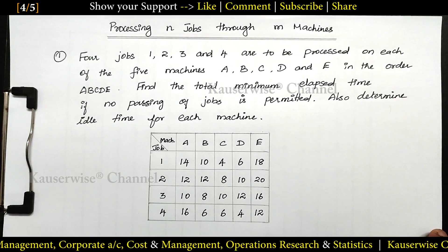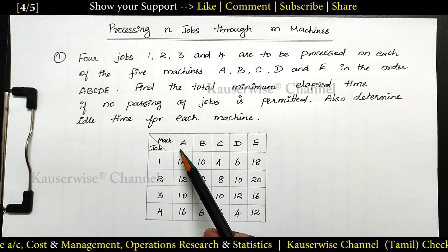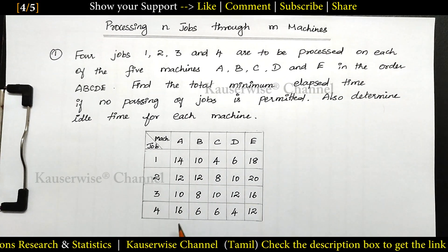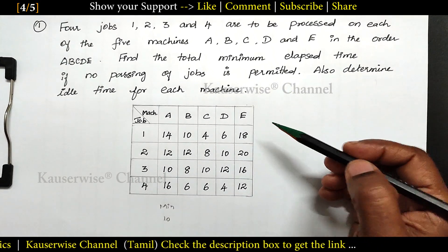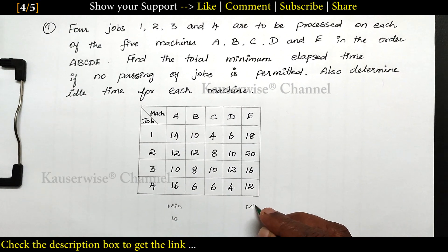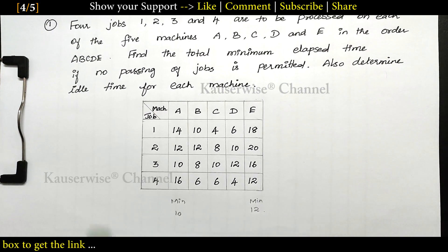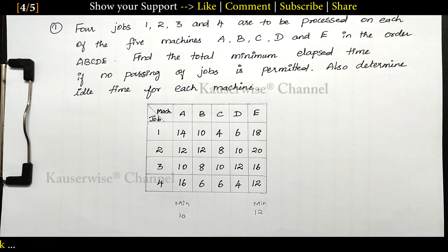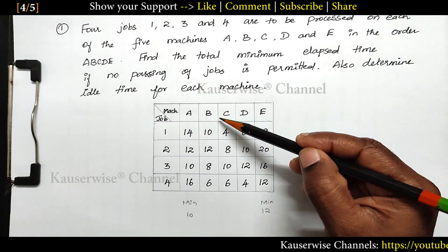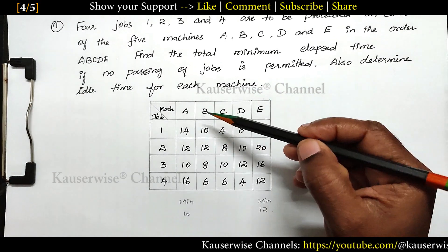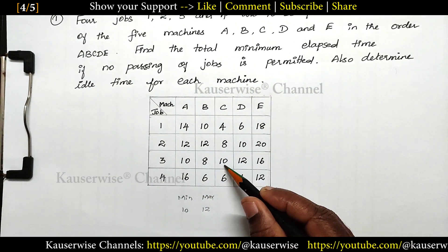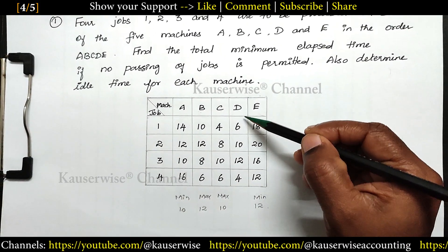Now let's see the solution. In order to solve the problem, the first step is we need to find the minimum duration on the first machine and last machine. For the first machine, the minimum duration is 10. In the same way, find out the minimum duration for the last machine. Here the last machine is E, so the minimum duration is 12.